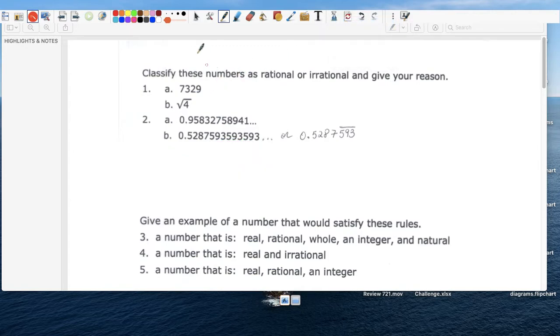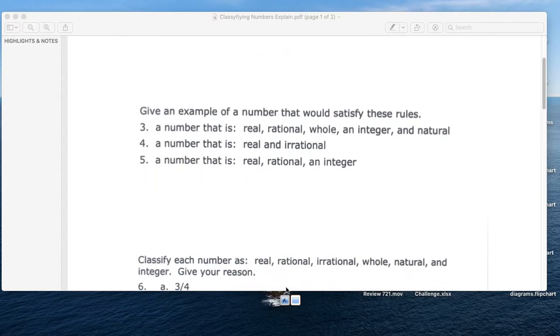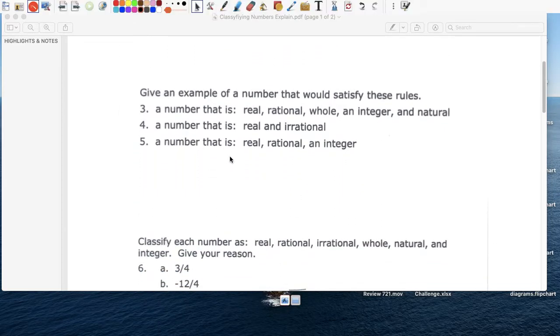Number three, give an example that would satisfy these rules. A number that's real, rational, whole, integer, and natural. Every number is real, so real, rational, whole, integer, and natural - how about the number five? It's natural, it's an integer, it's a whole number, it's rational.